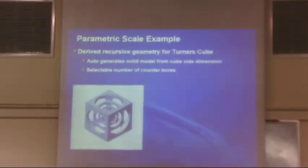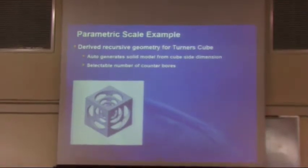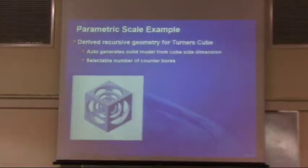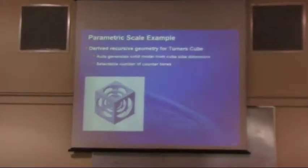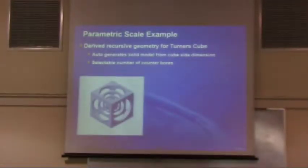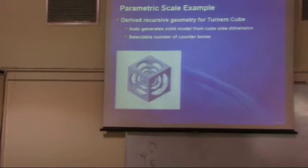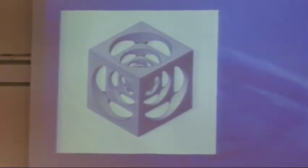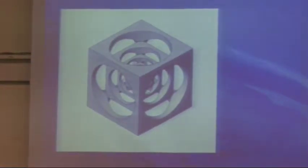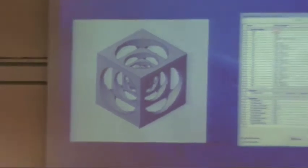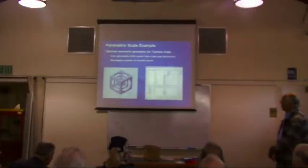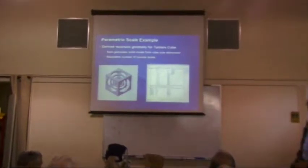I'm using a Turner's Cube as an example of parametric activities. The parametric sizing I set up so that the counterbores have a recursive mathematical relationship — they're each proportionally smaller. A lot of people have posted Turner's Cubes on the internet that they just kind of pulled out of their ear and it looks okay, but it doesn't scale particularly nicely. One way is to pick a dimension and make all the rest relative, so you change the cube size and the drawing automatically grows or shrinks.